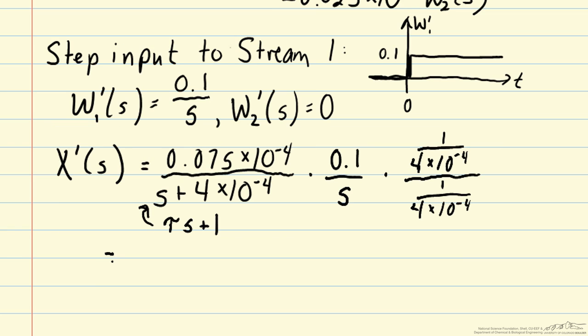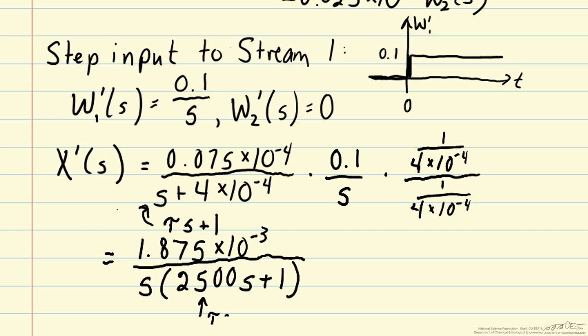So now we can rewrite this expression. So this form tau s plus 1, where tau is 2,500 seconds, is going to be a more convenient form for us to use.